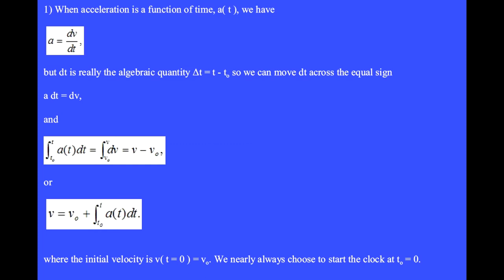If we integrate the left side from t zero to t, and the right side from v zero to v, then we get the integral of a(t)dt equals v minus v naught. Or we rearrange this to say, the final velocity is the initial velocity plus the integration of a(t) across the time interval, where the initial velocity v at t equals zero is v sub zero. We nearly always choose to start the clock at t zero equals zero.